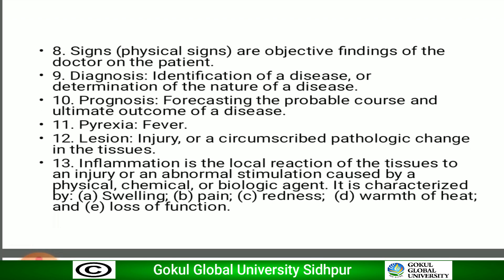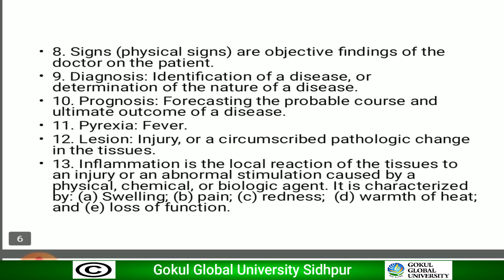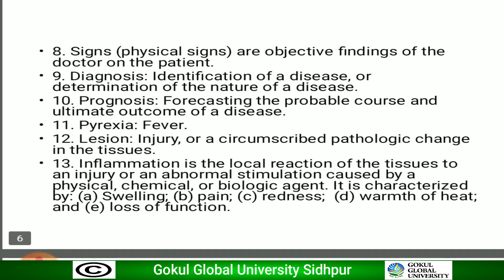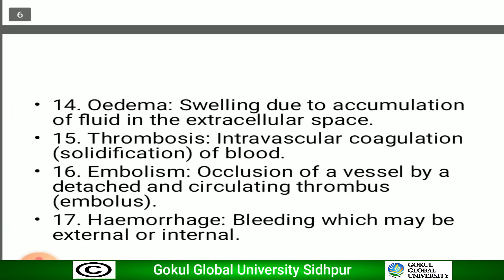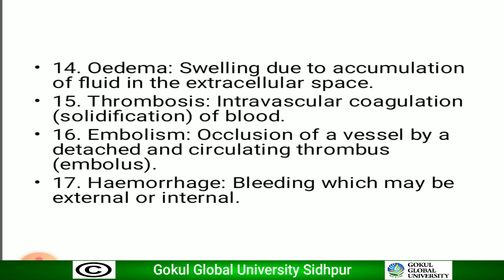A lesion is a circumscribed pathological change in the tissue. Inflammation is a local reaction of tissue to an injury or abnormal stimulation caused by a physical, chemical, or biological agent. It is characterized by swelling, pain, redness, warmth or heat, and loss of function.